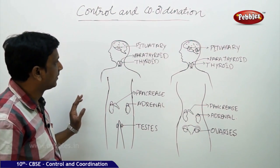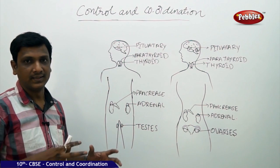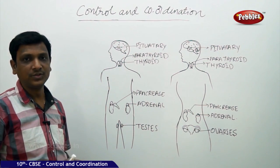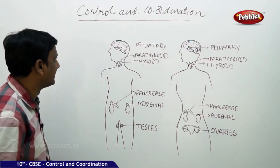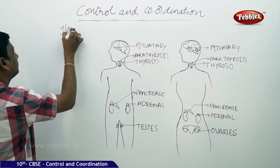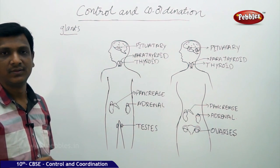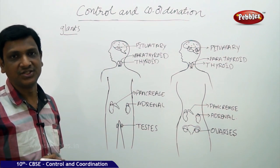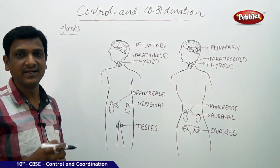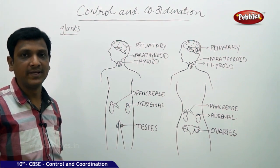Let us see what are the human hormones, the endocrine secretions present in the human body. The hormones are secreted by glands. A gland is a mass of tissue which is secretory in nature. These glands secrete chemical substances. We have different types of glands in our body.